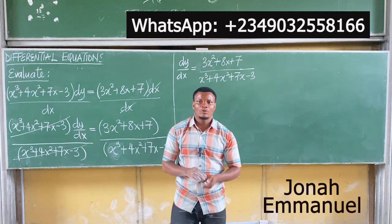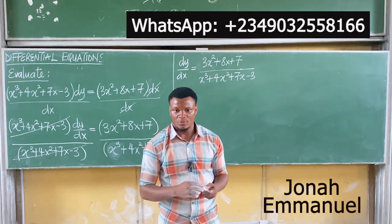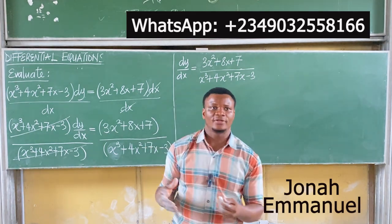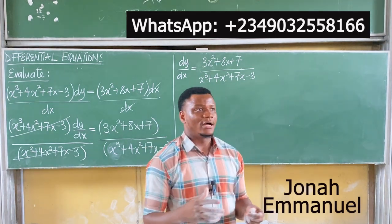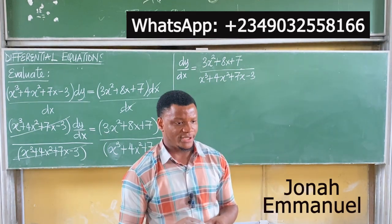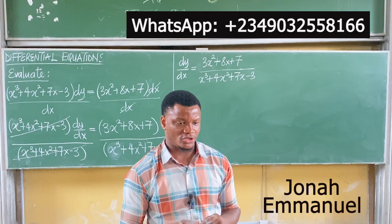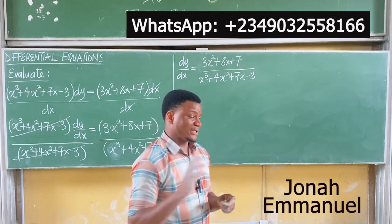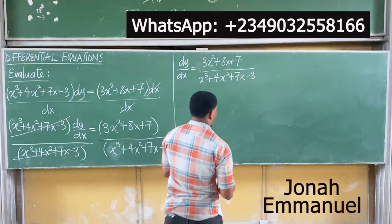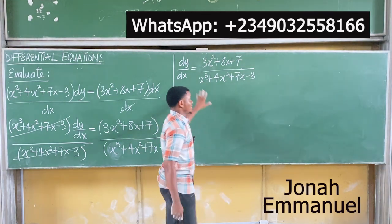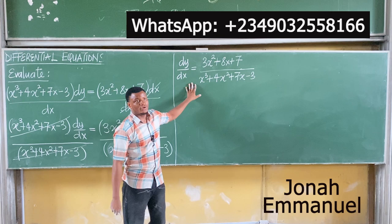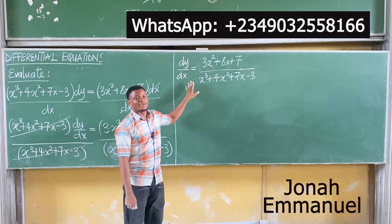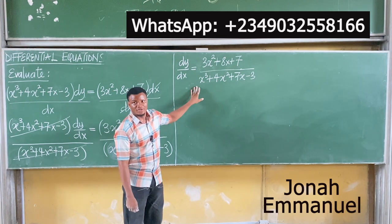So I have that dy/dx is equal to 3x squared plus 8x plus 7, all over x cubed plus 4x squared plus 7x minus 3. One of the ways of solving questions on integration is to do integration. Normally, this is how you should have been given the question.